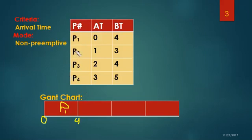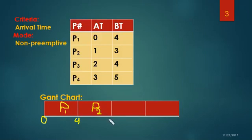Now I am going to pick up the next process, which is P2, that has arrived at time 1. The burst time for P2 is 3. I will place P2 here. The total burst time for P1 and P2 is 4 plus 3, which equals 7, so I put 7 here.